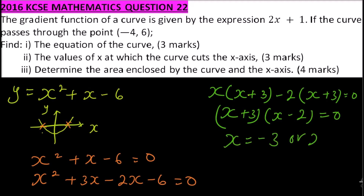This implies x equals minus 3 or x equals 2. These are the values where the graph cuts the x-axis, where y is 0. You get a mark for equating the function to 0, a mark for getting the factors, and a mark for solving the quadratic equation — 3 marks in total.